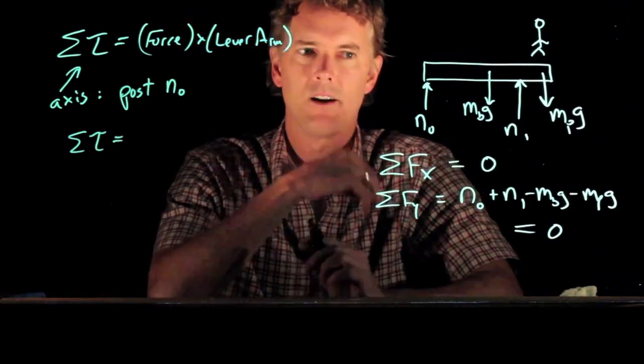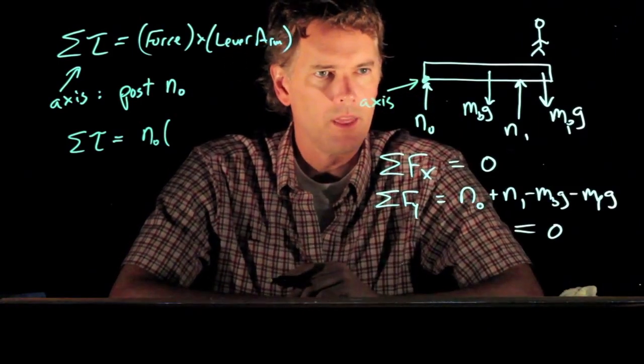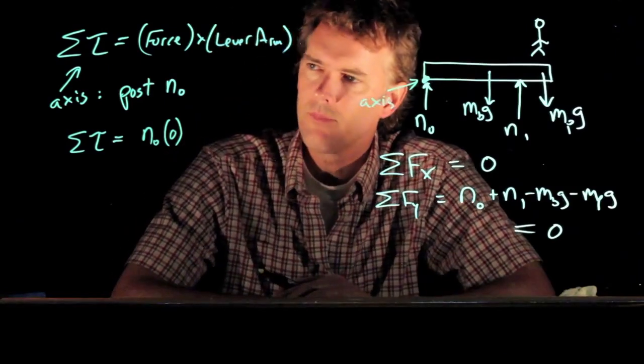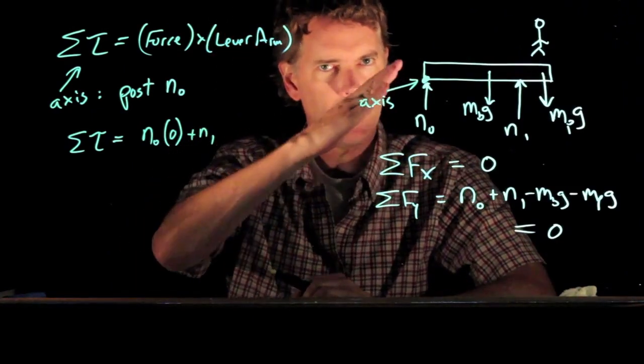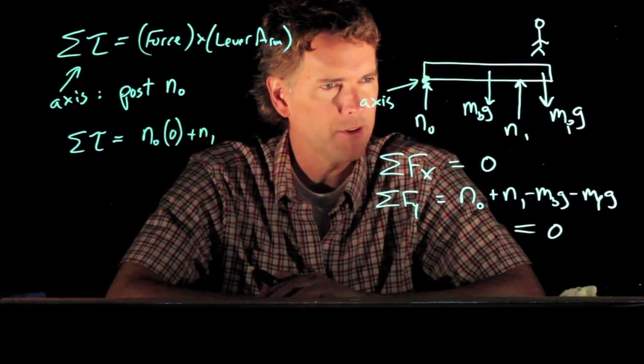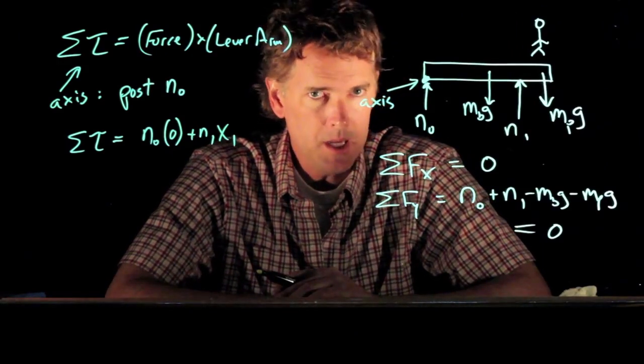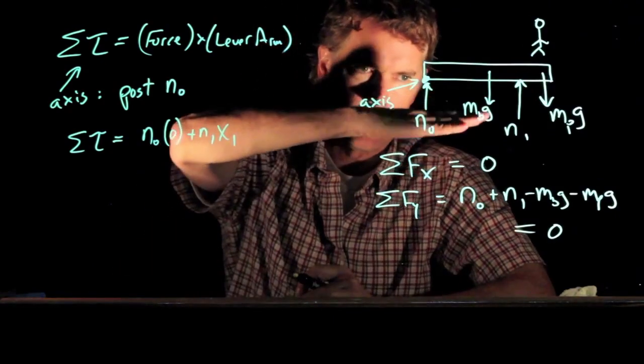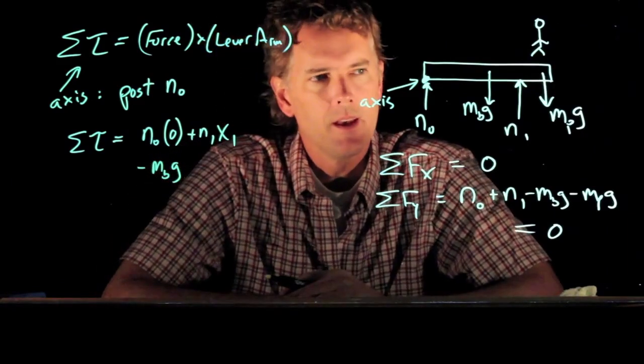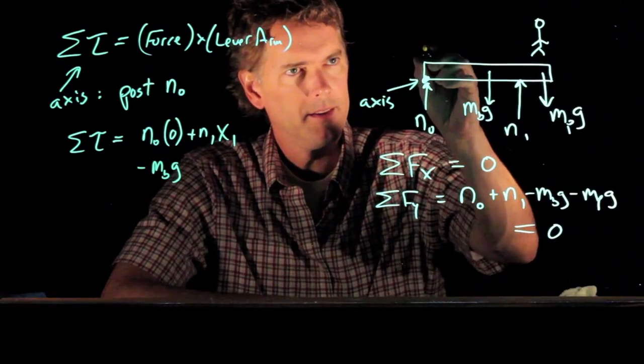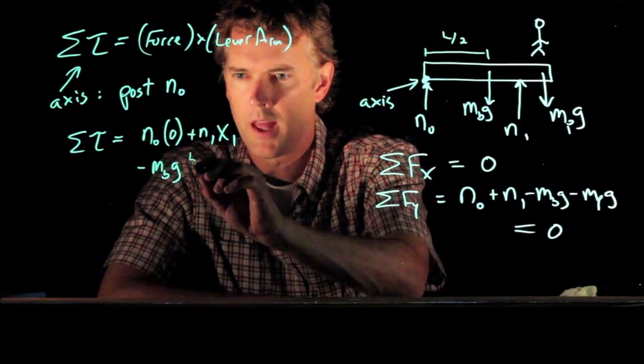All right. Sum of the torques equals what? Well n0 is the first force. But if that's going right through the axis of rotation then there's no lever arm. So that one is zero. And now we have n1 going up. And remember we said if it's trying to rotate it counterclockwise that's a positive torque. So what is the x value for n1? It is x1. We have the mass of the beam pulling down. And that's trying to rotate it clockwise. And so we give it a minus sign. So this is minus m sub b times g. And we have to figure out what the lever arm is for that. And if it's a uniform beam then that center of mass is halfway down the beam. So this becomes L over 2.